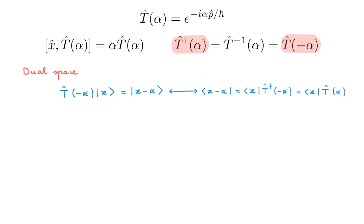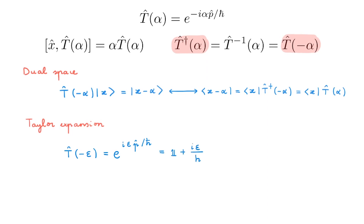The second additional property is the Taylor expansion of the translation operator for an infinitesimal translation by −ε: T(−ε) = e^(iεp/ℏ) ≈ 1 + (iε/ℏ)p + O(ε²). These two properties — the dual space action and the infinitesimal expansion — are extremely useful in many quantum mechanical problems, and links to videos where I use them are in the description.